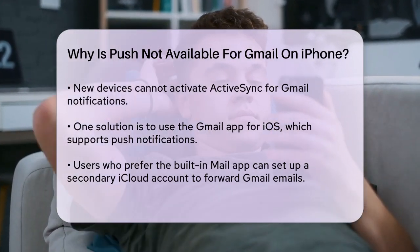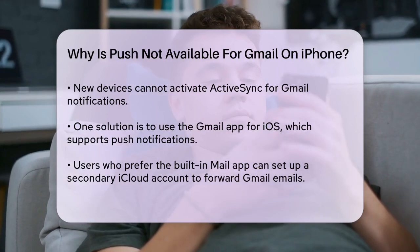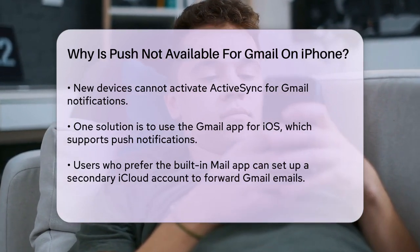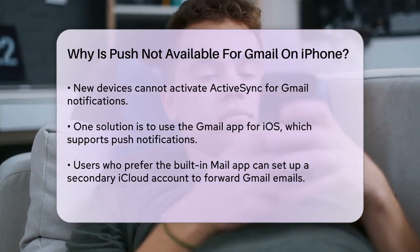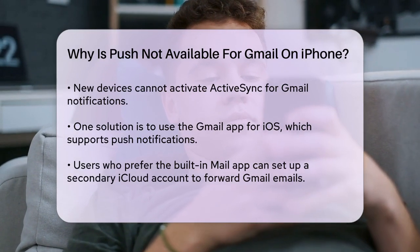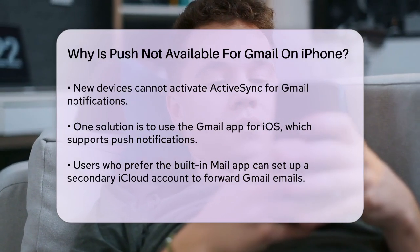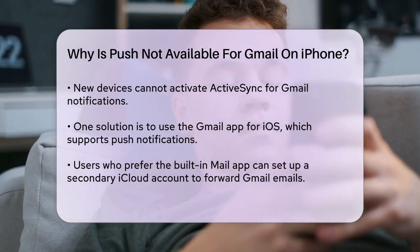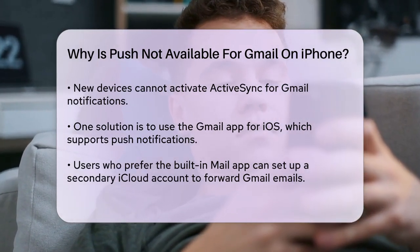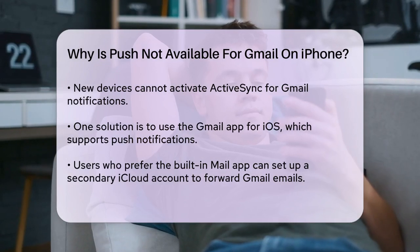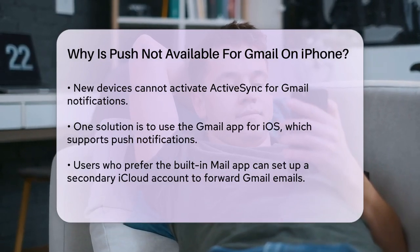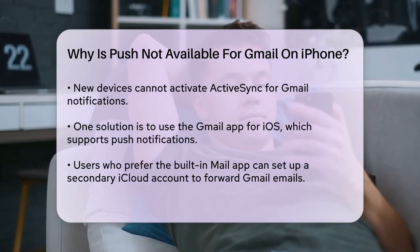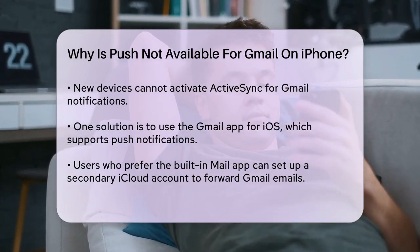For example, you can set up a secondary iCloud account to forward your Gmail emails and use Gmail's servers to send and receive mail. This involves some setup, including forwarding your Gmail emails to your iCloud address and configuring the iCloud account to use Gmail's SMTP server.